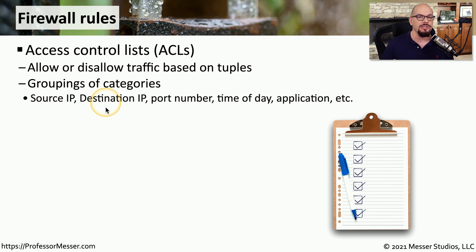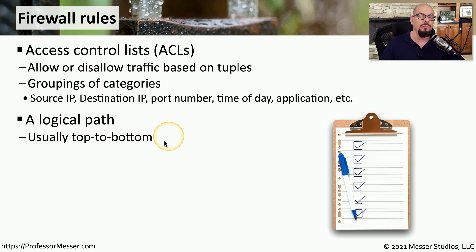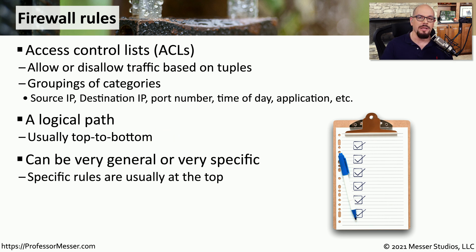Once the firewall finds a rule that matches, it looks at the disposition for that rule to determine whether that information should be allowed or denied. Some firewalls have hundreds or even thousands of rules in the rule base, so it's important to understand which particular rule is evaluated first. On most firewalls, it's done through a top-to-bottom approach — the firewall tries to match incoming data based on the first rule at the very top of the rule base. If nothing matches, it looks at the second rule, then the third, then the fourth, and so on, until it finds a matching rule. This means we generally put the more specific rules at the top so they can be evaluated before any other rules.